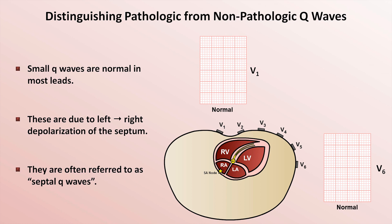As you may know from prior videos in this series, the left-to-right depolarization of the septum is the first event in ventricular depolarization. Since this vector is directed towards V1 and away from V6, the initial deflection in the QRS complex in those leads is positive and negative respectively. Since the bulk of the myocardial mass is in the left ventricle, the majority of the subsequent depolarization vector is negative in V1 and positive in V6. Therefore, V1 should have a small R-wave followed by a deep S-wave, and V6 should have a small Q-wave followed by a tall R-wave.